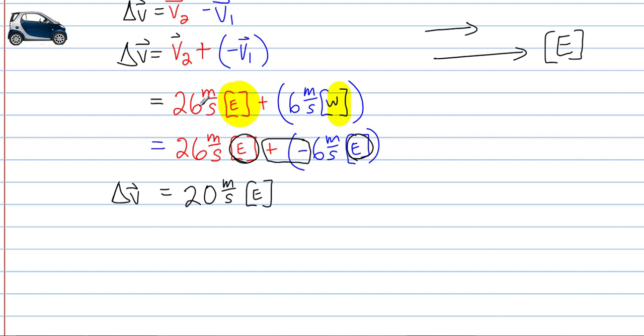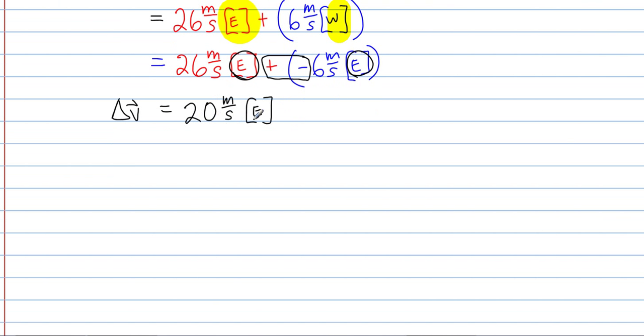The change of velocity is simply the difference between the two numbers. Yes, you can directly subtract 6 meters per second east from 26 meters per second east, and get 20, and get the same answer. There will be many situations, though, and more complex situations, where you're going to want to add the opposite. So, I'm simply showing you this method. It doesn't mean you have to do this method every time.